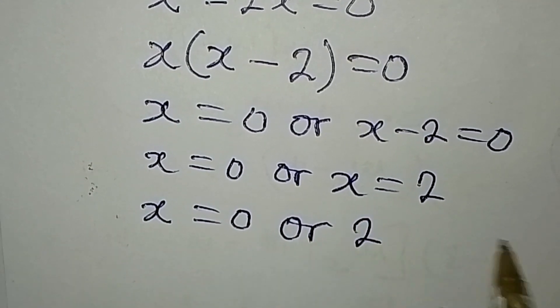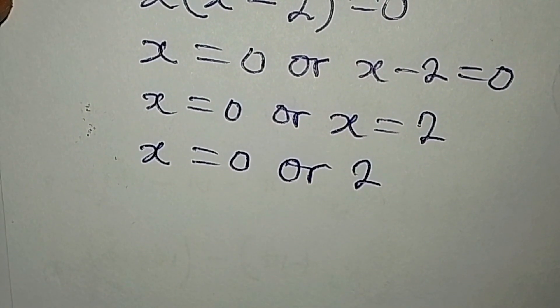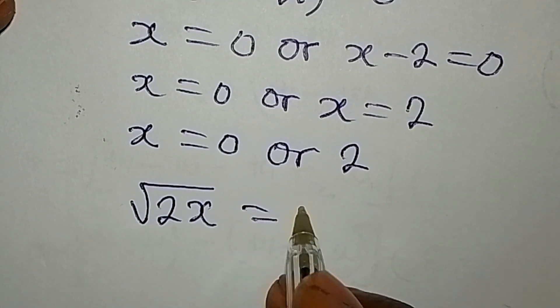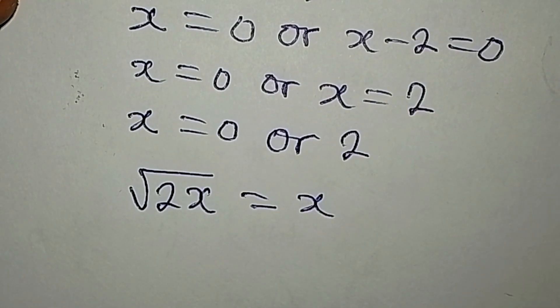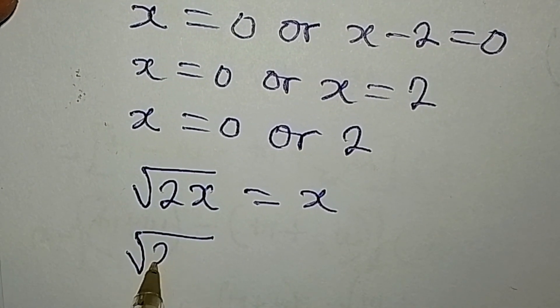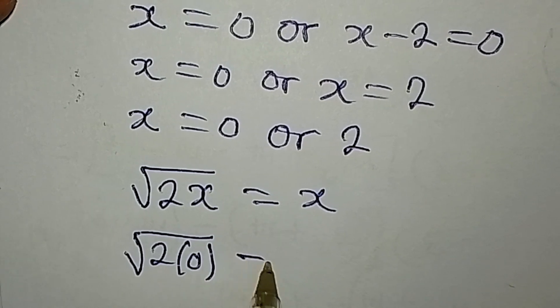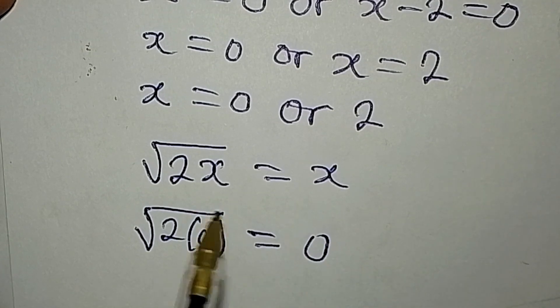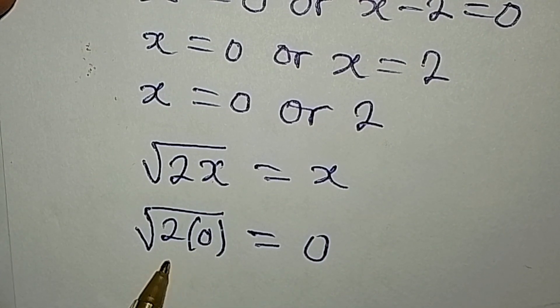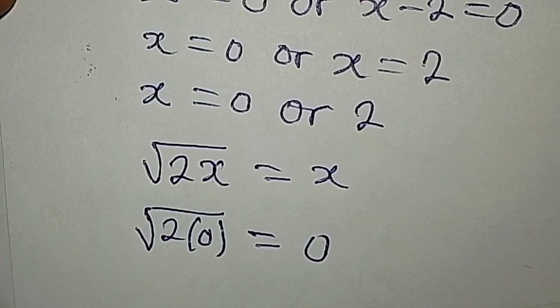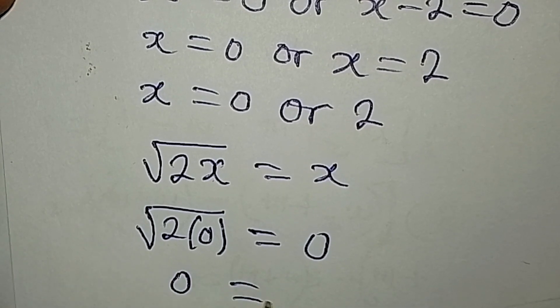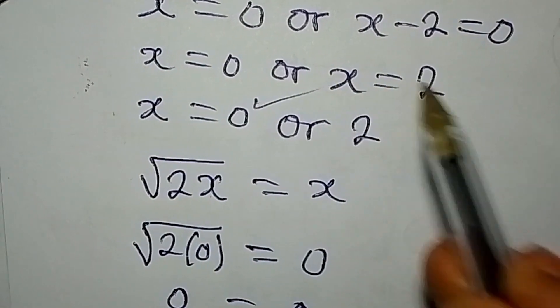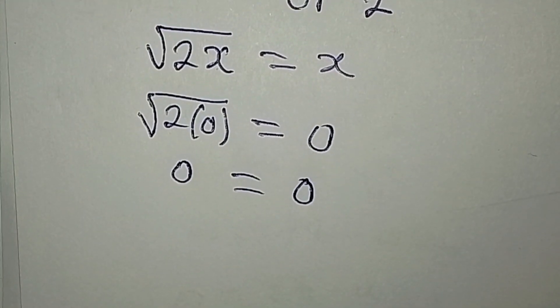Now remember, I always confirm my answer. The original equation is square root of 2x equals x. Let's work with the first value of x, which is 0. We have square root of 2 times 0 equals 0. 2 times 0 is 0, and square root of 0 is 0. So we have 0 on the right and on the left, meaning that x is satisfying.